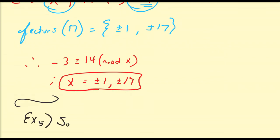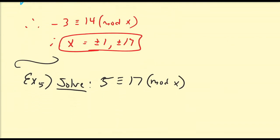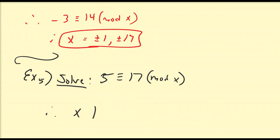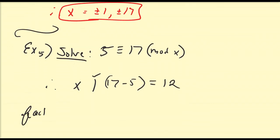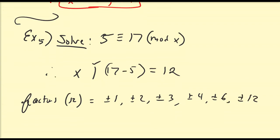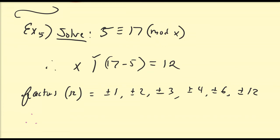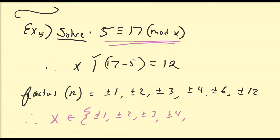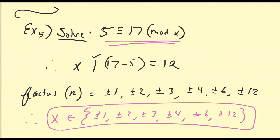Another example: solve the congruence equation 5 is congruent to 17 modulo x. That means x must divide evenly into 17 minus 5, which is equal to 12. The factors of 12 are plus or minus 1, plus or minus 2, plus or minus 3, plus or minus 4, plus or minus 6, and plus or minus 12. So the solutions to this congruence equation are the integer factors of 12.